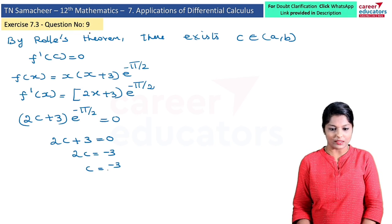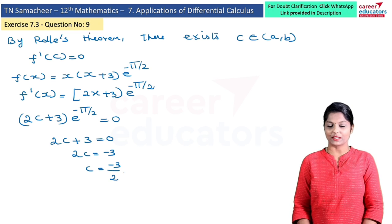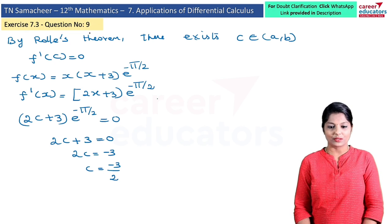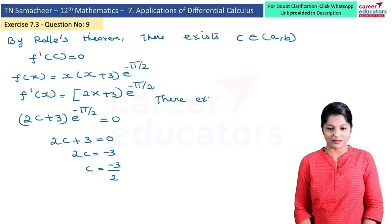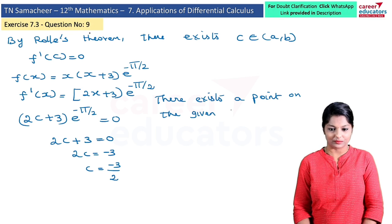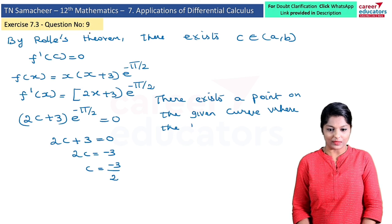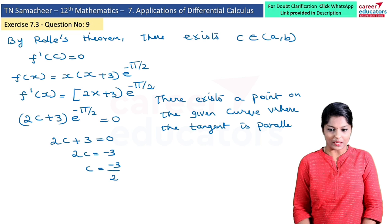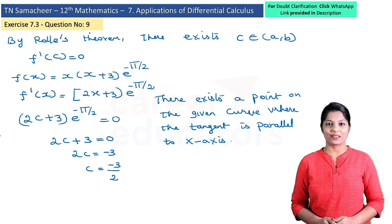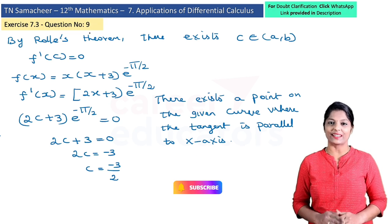Therefore c = −3/2. This value lies within the open interval (−3, 0). So there exists a point on the given curve where the tangent is parallel to the x-axis. We have completed this problem. For more videos, subscribe to our channel. Thanks for watching — I will catch you in the next video.